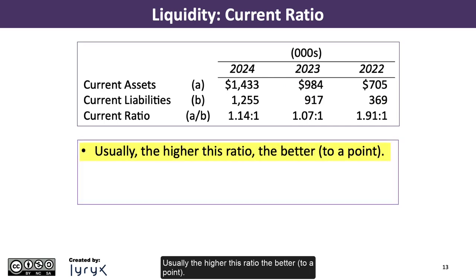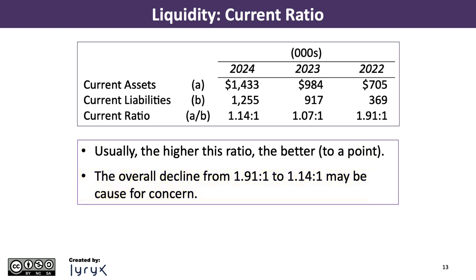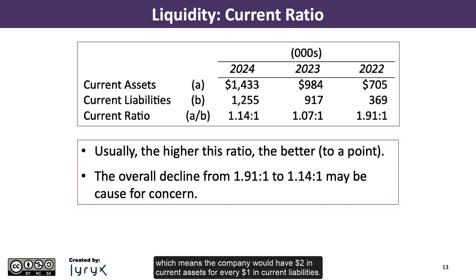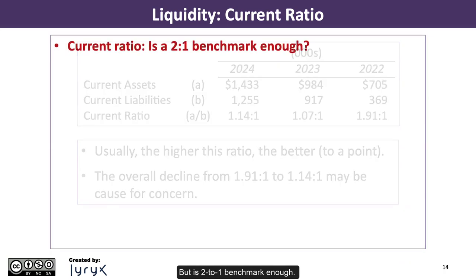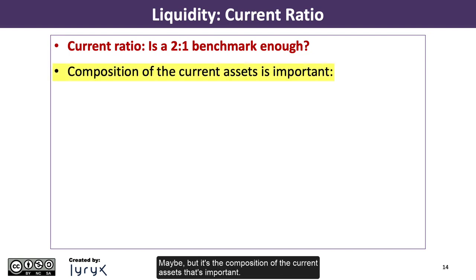Usually the higher this ratio the better, to a point. The overall decline from 1.91 to 1.14 over the three-year period may be cause for concern. Often the current ratio is compared to a desired benchmark, such as 2 to 1, which means the company would have $2 in current assets for every $1 in current liabilities. But is a 2 to 1 benchmark enough? Maybe, but it's the composition of the current assets that's important.